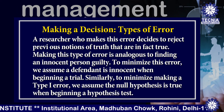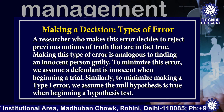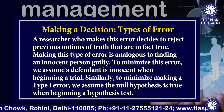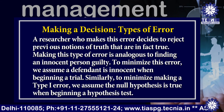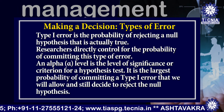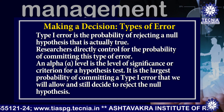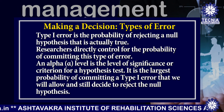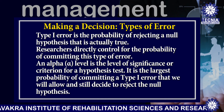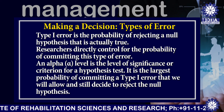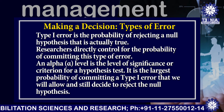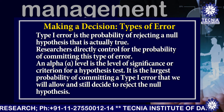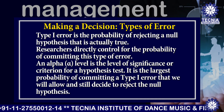To minimize this error, we assume a defendant is innocent when beginning a trial. Similarly, to minimize making a Type 1 error, we assume the null hypothesis is true when beginning a hypothesis test. Type 1 error is the probability of rejecting a null hypothesis that is actually true. Researchers directly control for the probability of committing this type of error. An alpha level is the level of significance or criteria for a hypothesis test. It is the largest probability of committing a Type 1 error that we will allow and still decide to reject the null hypothesis.